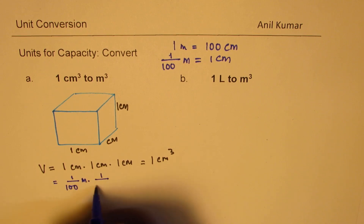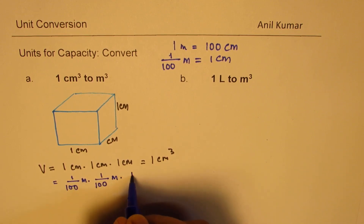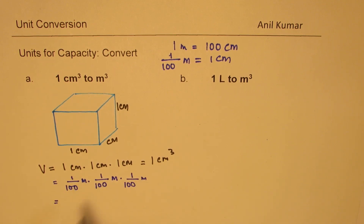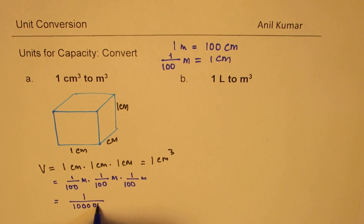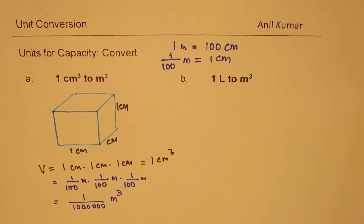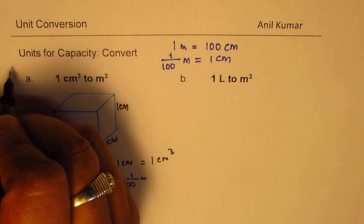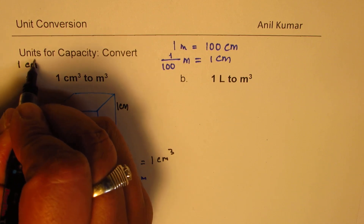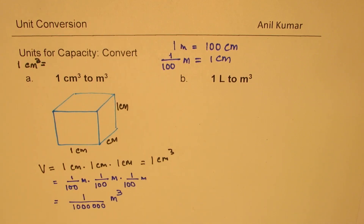So we get one over one hundred meter, times one over one hundred meter, times one over one hundred meter. This is equal to one over one million — that's one, two, three, four, five, six zeros — one million meter cube. So the conversion factor is one centimeter cube equals ten to the power of minus six meter cube.